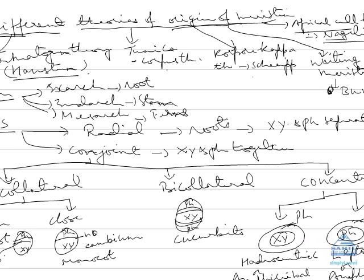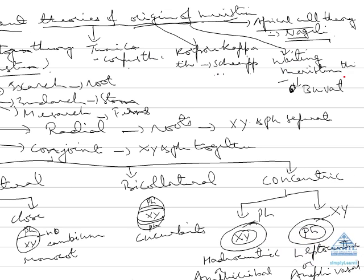Then comes quiescent center theory, this was given by Clowes and lastly modern theory. In modern theory, waiting meristem theory which was given by Popham. Then came quiescent center theory, these are two modern theories.